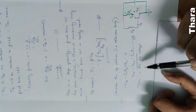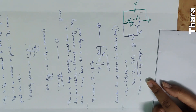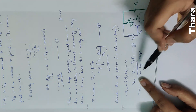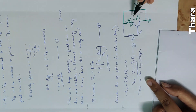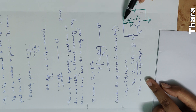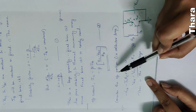VCE is the output voltage — collector-emitter voltage. We apply KVL to the output loop. The collector loop is the output loop.